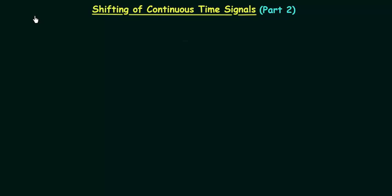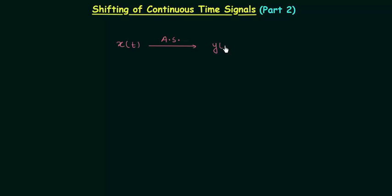In the previous lecture I explained time shifting of continuous time signals. In this lecture I will explain how to shift the amplitude. Let's say the original signal is xt, and after performing the amplitude shifting, the new signal is yt, where yt is equal to xt plus k.